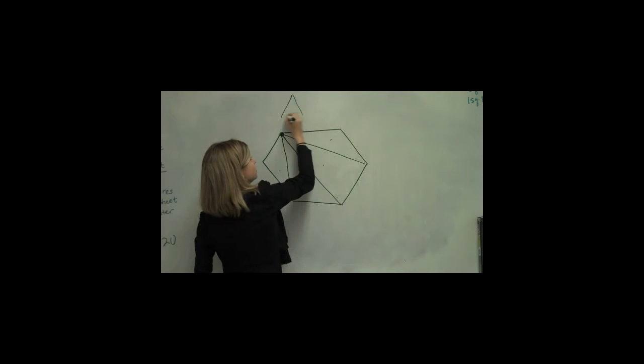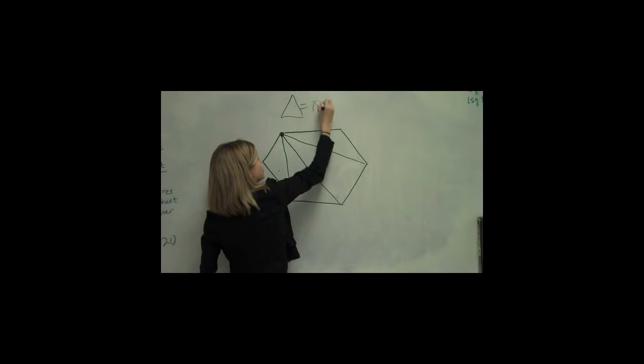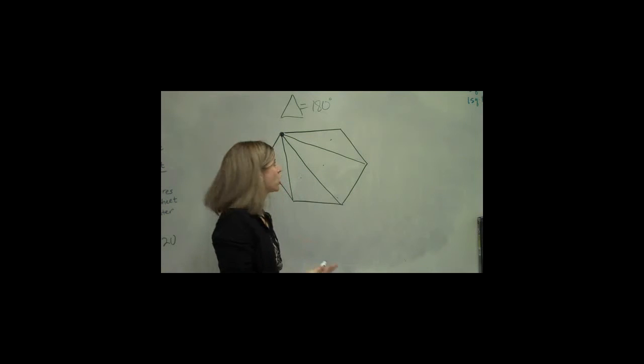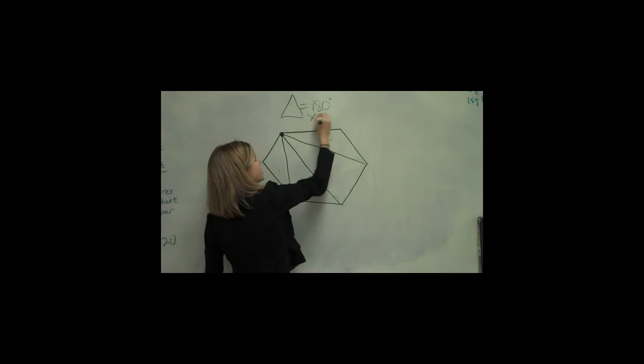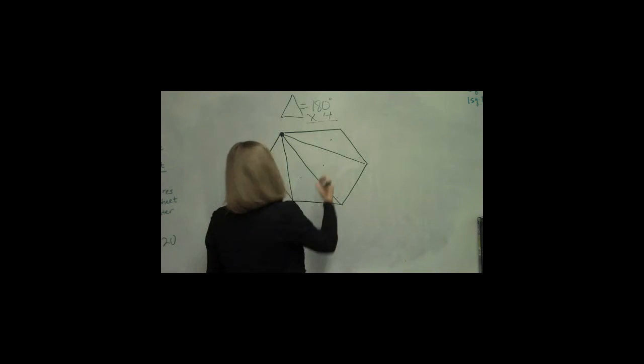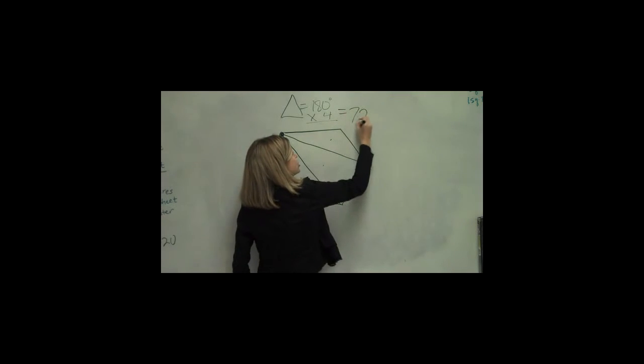And I know that a triangle, the sum of a triangle is 180. So if I have four of these, all I have to do is take 180, multiply that by four, and it's going to give me 720 degrees.